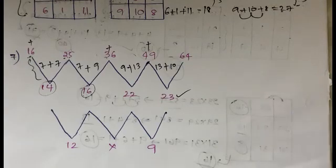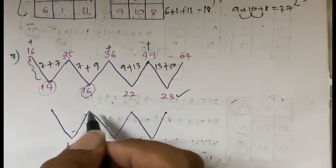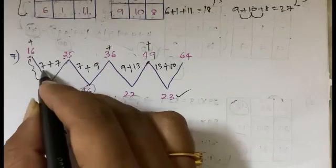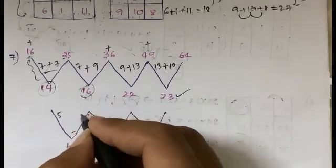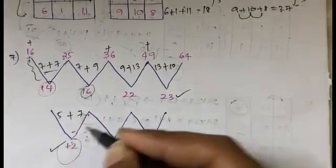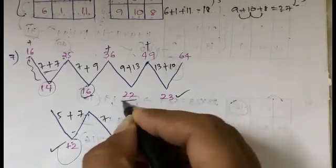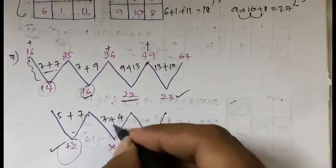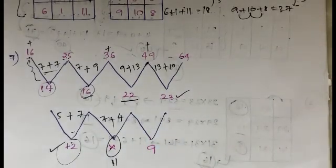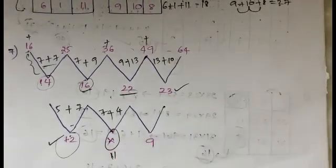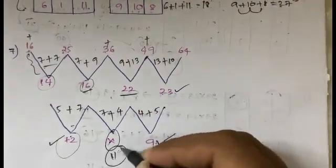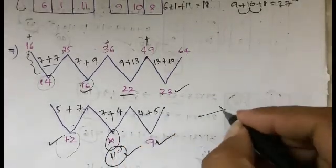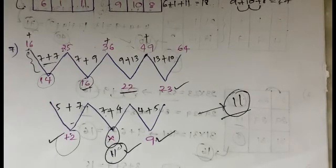Now applying the same logic to find 12, x, and 9: 1 plus 4 is 5, 1 plus 6 is 7, and 5 plus 7 gives 12 — correct. For x: 1 plus 6 is 7, and for 22, 2 plus 2 is 4, so 7 plus 4 gives 11. Before confirming, let's verify: 2 plus 2 is 4, 2 plus 3 is 5, and 4 plus 5 is 9 — correct. So the answer is 11.